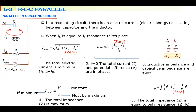One more thing: in your book, the parallel resonating circuit is explained, but there is also a series resonating circuit that is not explained in the book — yet they do ask questions about it. In parallel and series resonating circuits, three of the five properties are the same, and only two are different.